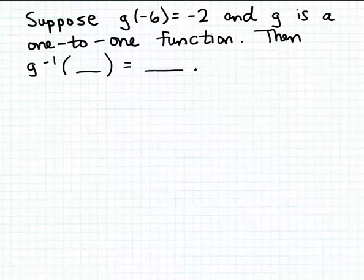That's what we get when we interchange the input and output values in this expression. So if g of minus six is equal to minus two, then we know that g inverse of minus two is going to be equal to minus six.